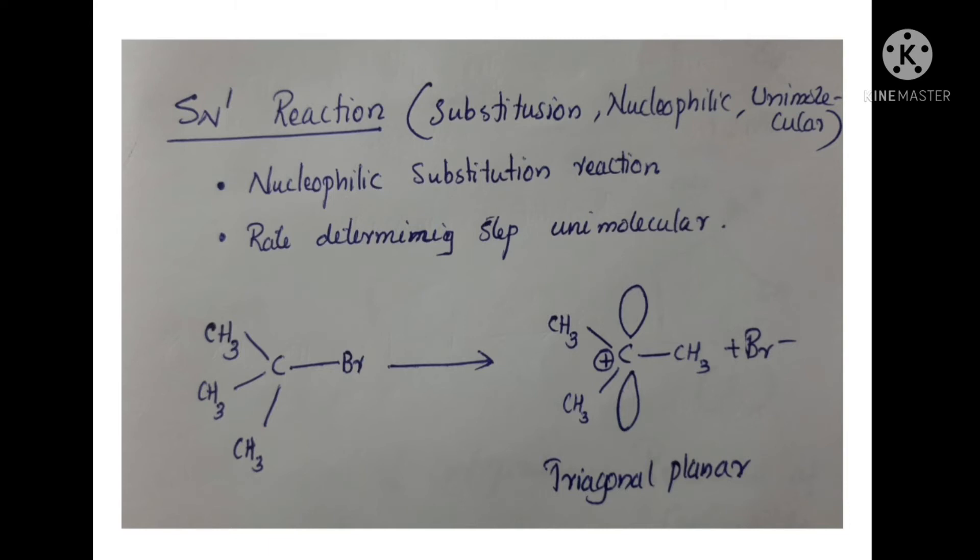In a plane, there are three CH3 groups. After the heterolytic cleavage, the vacant P orbital is perpendicular to the plane.